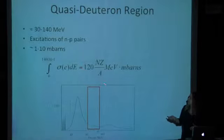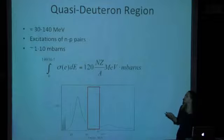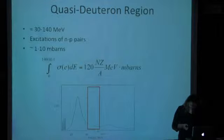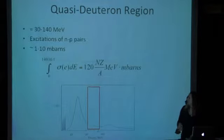The equation you see here tells you, this is a sum rule, which tells you that the integral of this cross-section from 0 to the end of this region to 140 is proportional to Z and inversely proportional to A. This empirical equation can be used to roughly estimate the total absorption, photonuclear absorption. Typically, about 70% goes to this region and about 30% goes to this region. But it depends on the particular reaction.